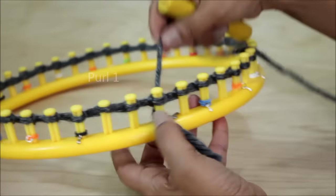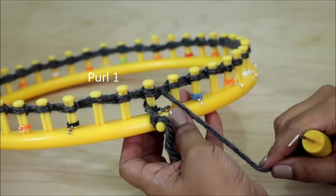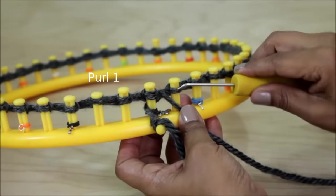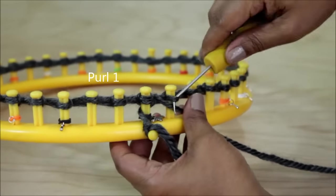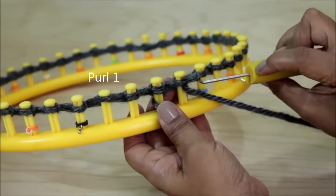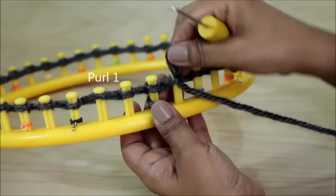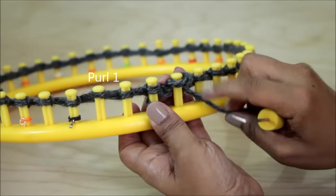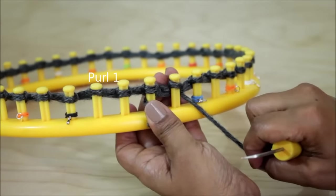And then after that we're doing the purl stitch. So bring the working yarn down below the existing loop with your hook. Scoop up the yarn and you're going to make a new loop right here. Take the old one off, put the new one on and pull the yarn.